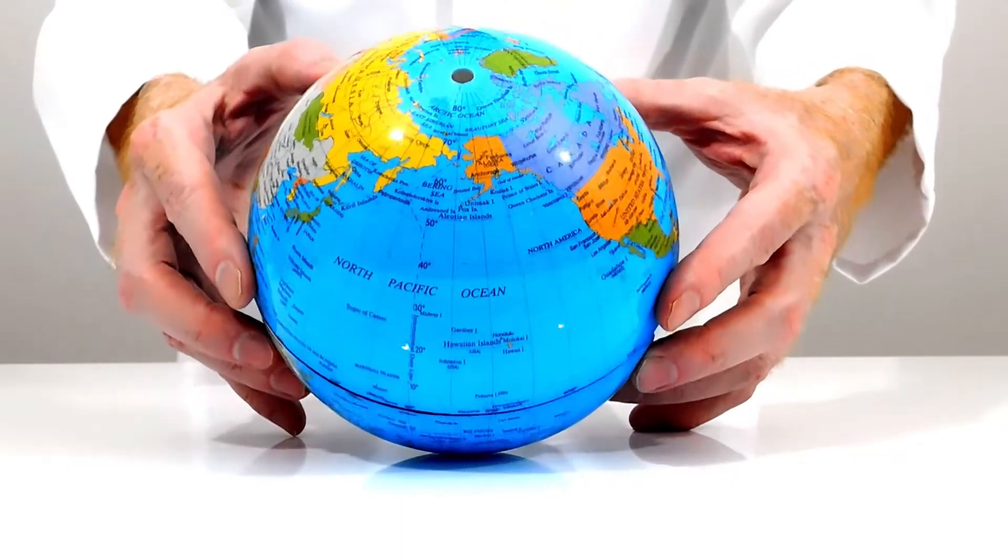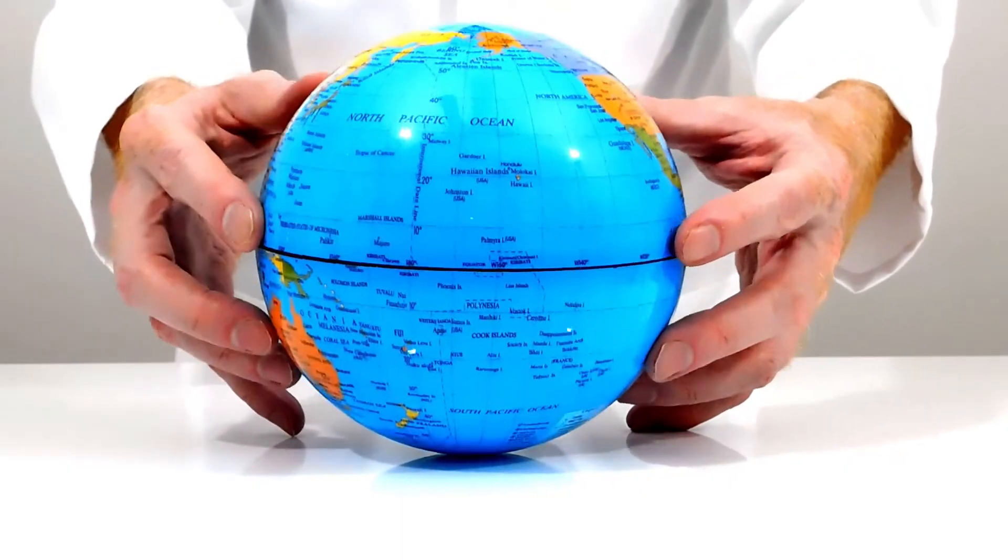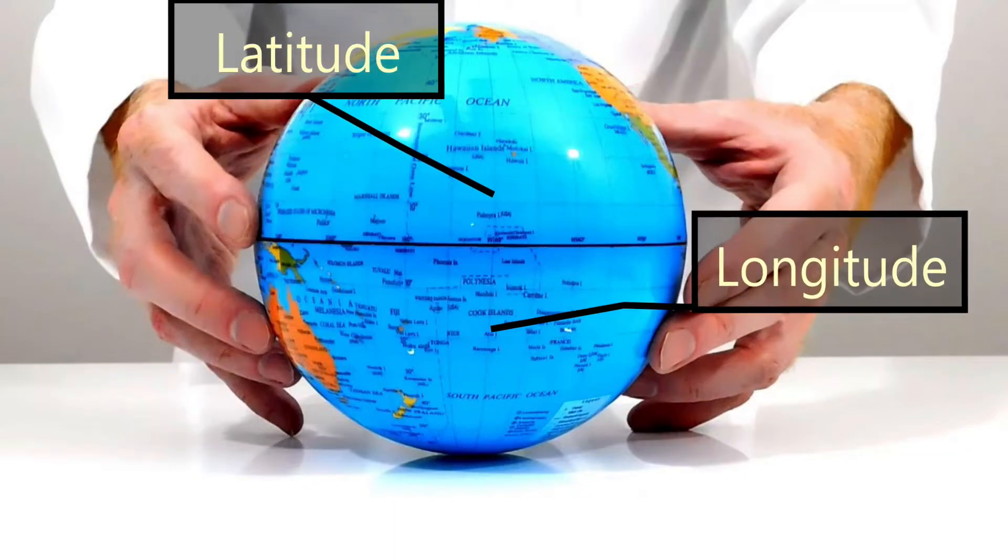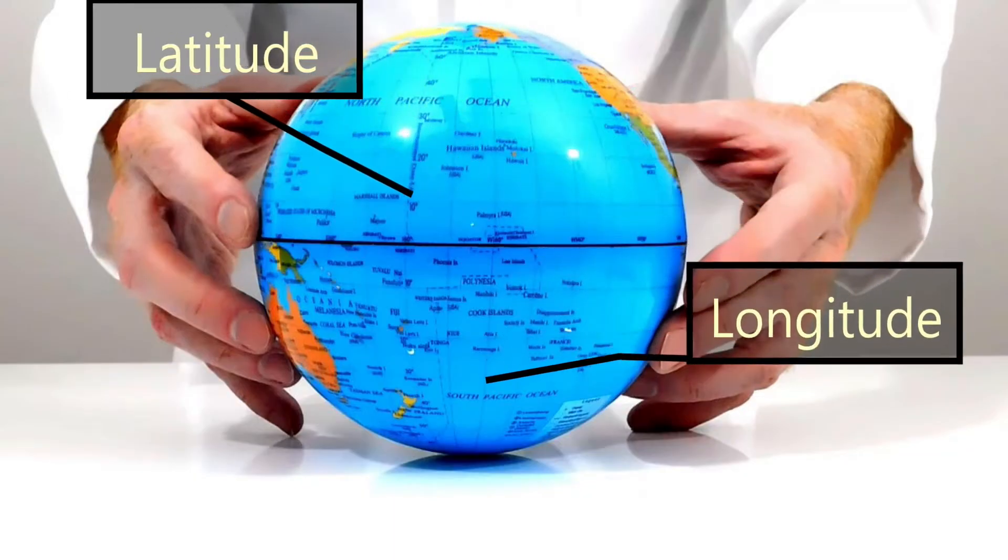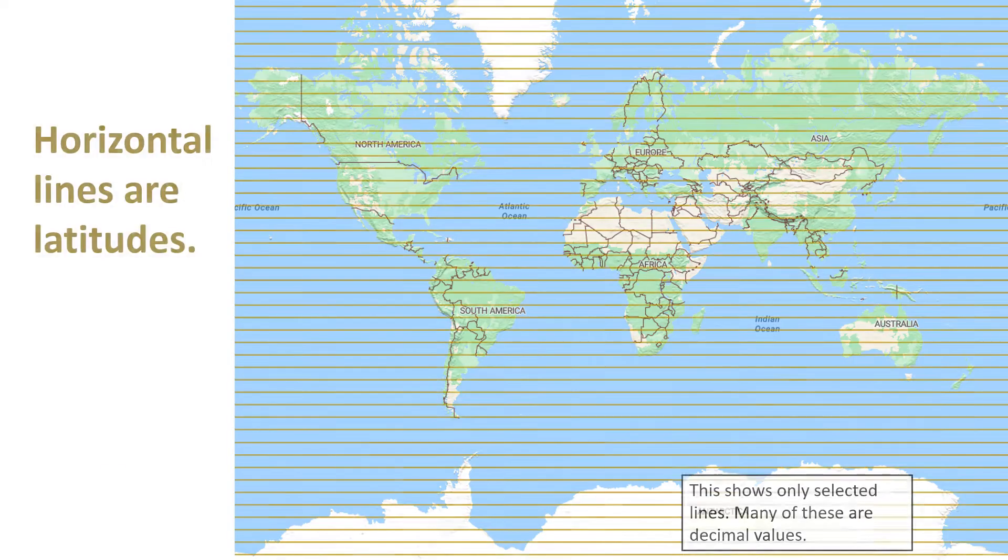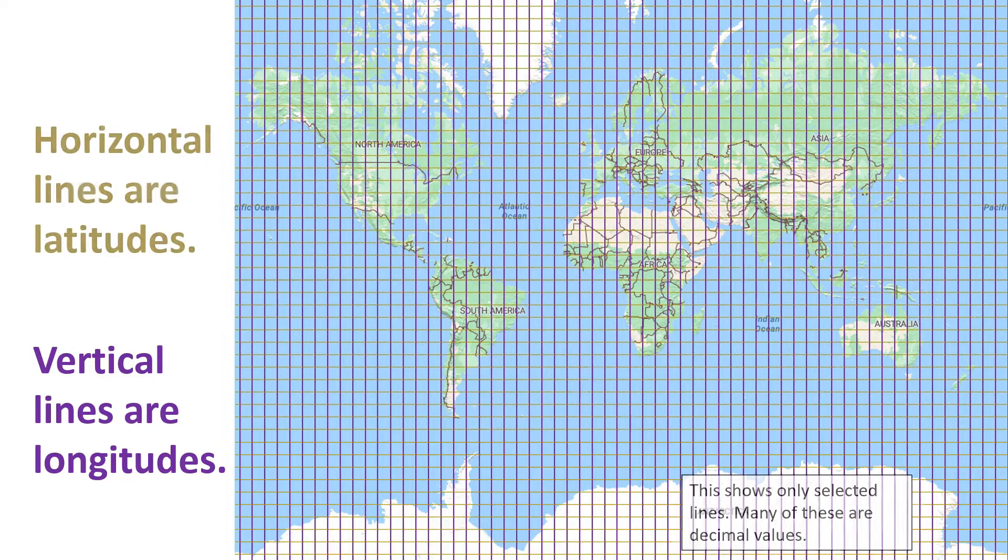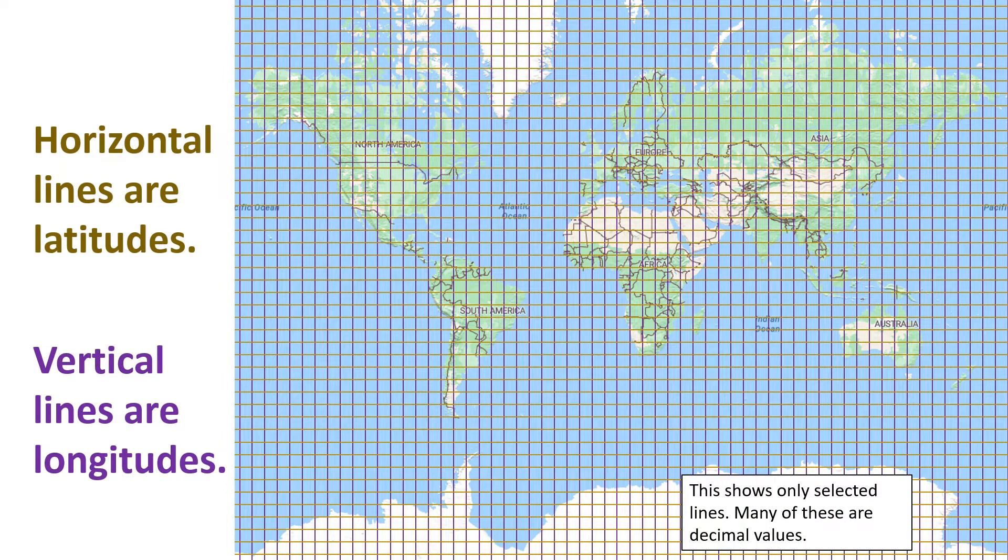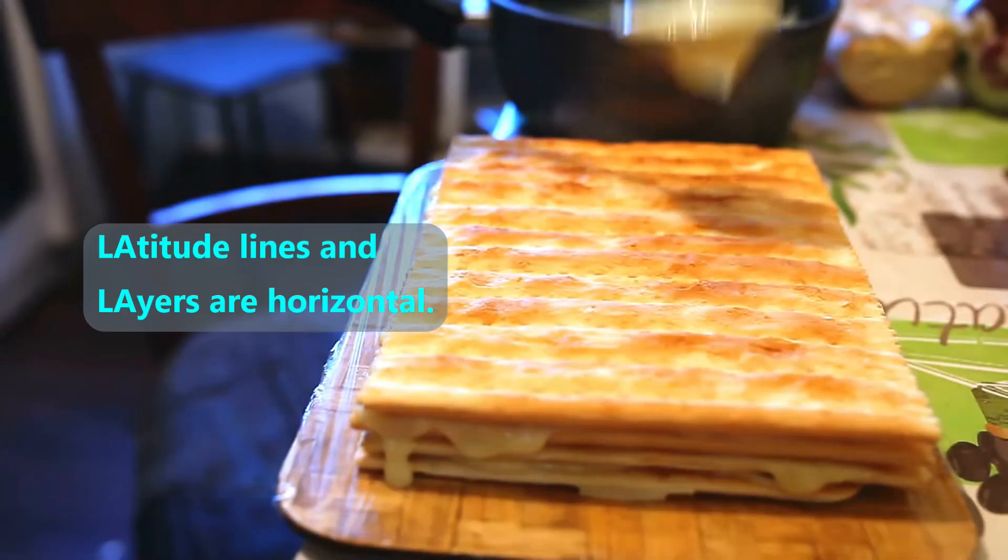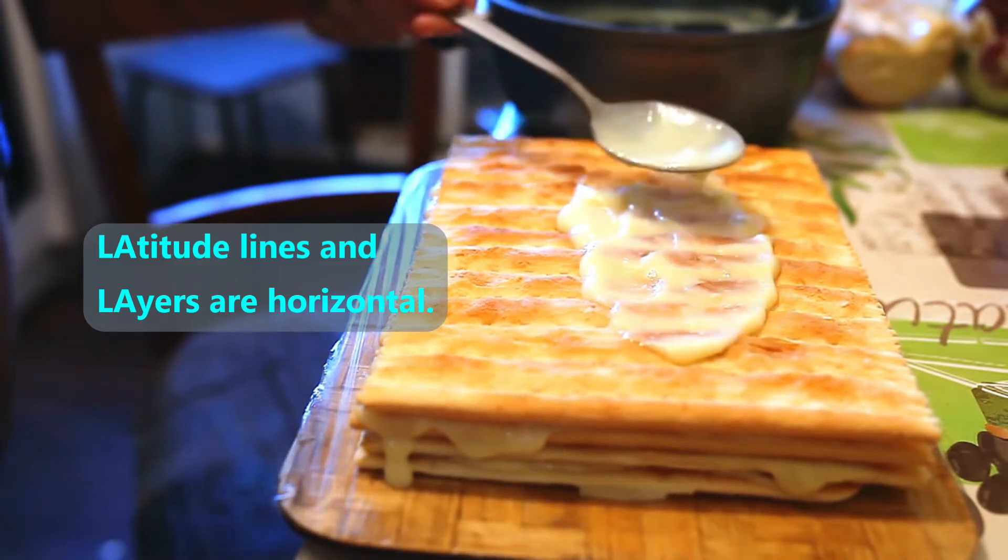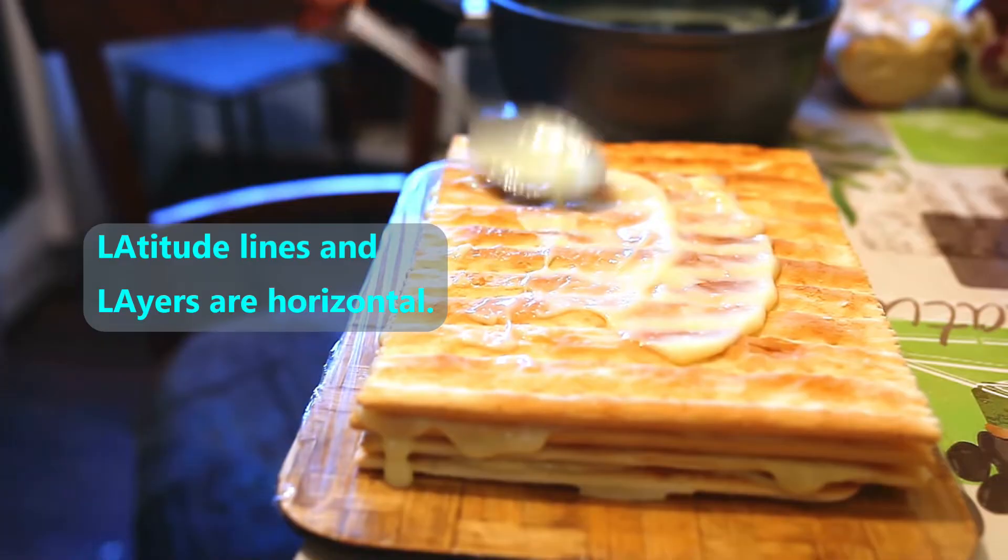The most popular system of making an imaginary grid over the Earth's surface is by using latitude and longitude lines. We can see them as horizontal and vertical lines on this globe. The latitude lines are horizontal and the longitude lines are vertical. One way to remember that the latitude lines are the horizontal ones is because they are lying down like layers on a cake. Both of the words latitude and layers start with the letters L and A.